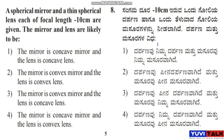Next question: A spherical mirror and a thin spherical lens, each of focal length 10 cm, are given. The mirror and lens are likely to be: Option 1: the mirror is a concave mirror and the lens is a concave lens. Option 2: the mirror is a convex mirror and the lens is a convex lens. Option 3: the mirror is a convex mirror and the lens is a concave lens. Option 4: the mirror is a concave mirror and the lens is a convex lens.